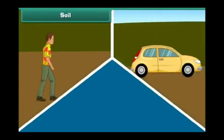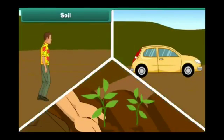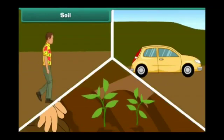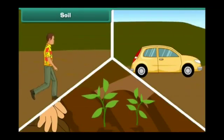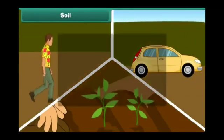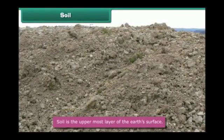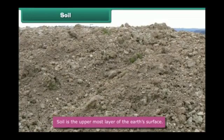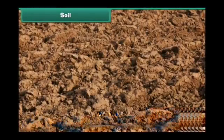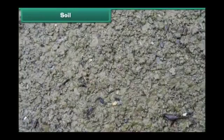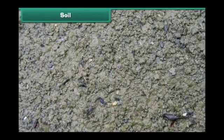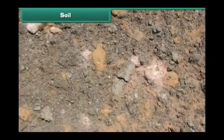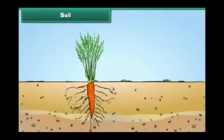It is everywhere. We walk on it, we drive on it, and we grow plants on it. Wondering what is it? It is soil. Soil is the uppermost layer of the earth's surface. It consists of a mixture of rock finely ground into powder, water, air, minerals, and a variety of living and dead life forms. It serves as a natural medium for growth of plants.